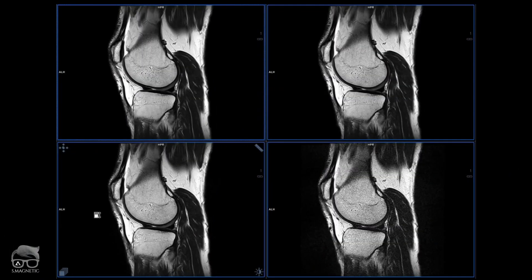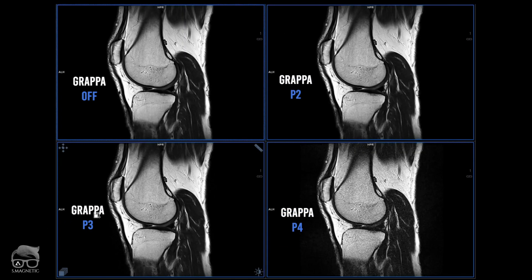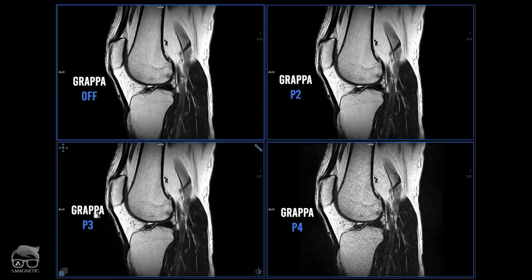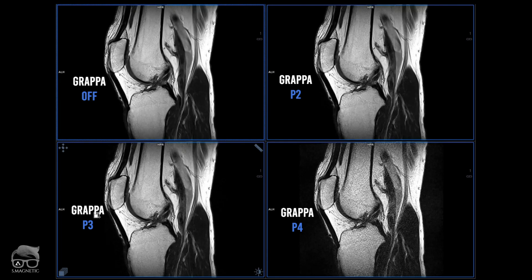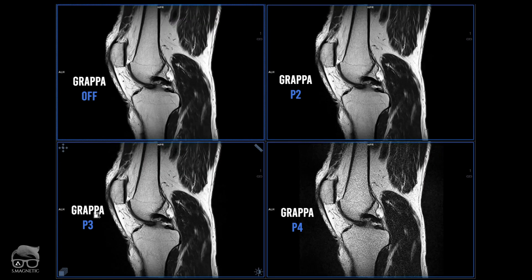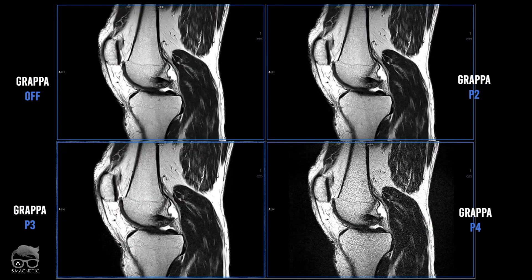Here is the four-image head-to-head comparison: first is PAT OFF, second is PAT2, third is PAT3, and fourth is PAT4. On first look, PAT OFF, PAT2, and PAT3 seem fine. PAT4 shows a lot of noise — look at the muscle tissue, there's a lot of noise there. Let's zoom in a little bit.